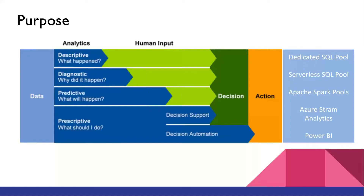A data analyst provides what happened until yesterday; a data scientist provides what could happen in the future. A person on the management side looks at both, but random numbers from machine learning algorithms or SQL code won't help them directly — they need visualizations like graphs, bar charts, and trend lines. That is when Power BI comes into picture, which is prescriptive analytics — deciding what to do today versus tomorrow.